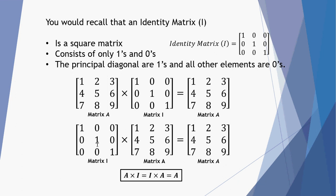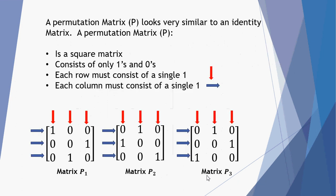Likewise, if you multiply the identity matrix with matrix A, it also returns you matrix A. It's much like multiplying a number by the number 1 — for example, 1 times 2 is 2, or 2 times 1 is 2. So that's identity matrices; let's have a look at permutation matrices.